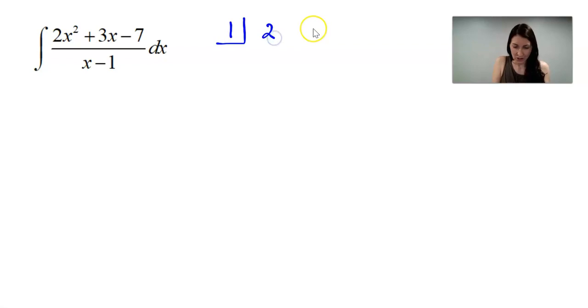My coefficients are 2, 3, and negative 7. Let's bring down the 2, multiply and add, and multiply and add.